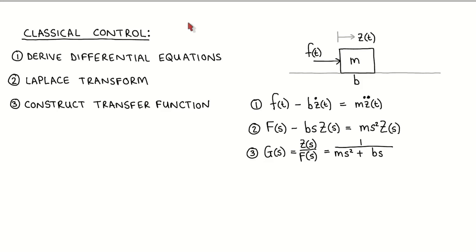For this introduction to state variable modeling, I am going to work through a simple modeling example using the classical approach and then work through the same example using the state variable approach. In the classical control approach, one describes the dynamics of a system using transfer functions. The modeling process consists of the following steps: derive the differential equations for the system, transform them to the Laplace domain, and rearrange things to get the transfer function.